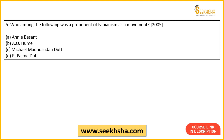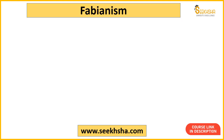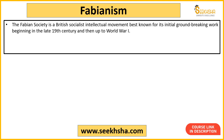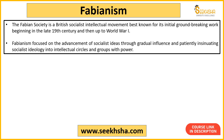The fifth question: Who among the following was a proponent of Fabianism as a movement? Options: (A) Annie Besant, (B) Aurobindo, (C) Michael Madhusudan Dutt, (D) R. Palme Dutt. The correct answer is Option A — Annie Besant. The Fabian Society was a British socialist intellectual movement with British origins. Active from the 19th century and reaching its peak around World War I, it encouraged the advancement of socialist ideas as opposed to capitalist structure, and Annie Besant was also encouraging this socialist ideology within India.